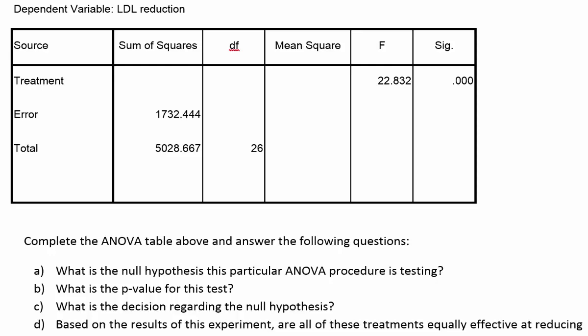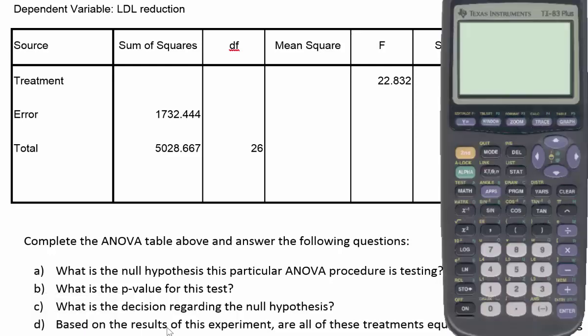Remember, the relationship is that the treatment plus the error sum of squares is equal to the total sum of squares. So if you have the total, you can take away the error sum of squares and it'll give you the treatment sum of squares. All we have to do is subtract: 5,028.667 minus 1,732.444.